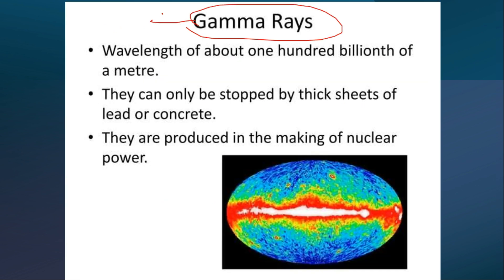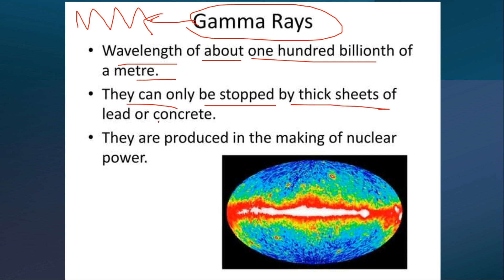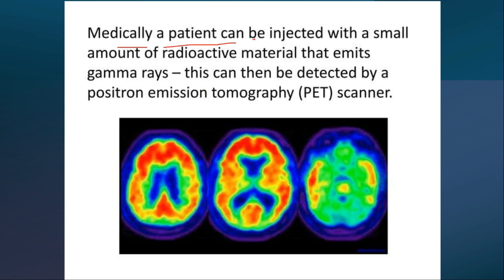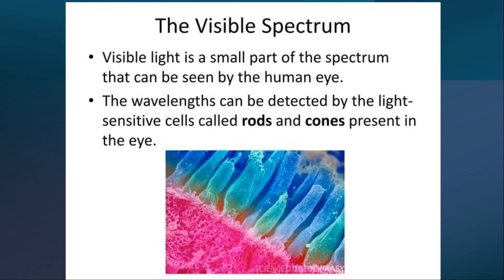Gamma rays have the highest frequency of all electromagnetic waves, with a wavelength of about 100 billionths of a meter. They are used in nuclear power generation. Gamma ray exposure is harmful to human life. Medically, a patient can be injected with a small amount of radioactive material that emits gamma rays, which can then be detected by a positron emission tomography (PET) scanner.